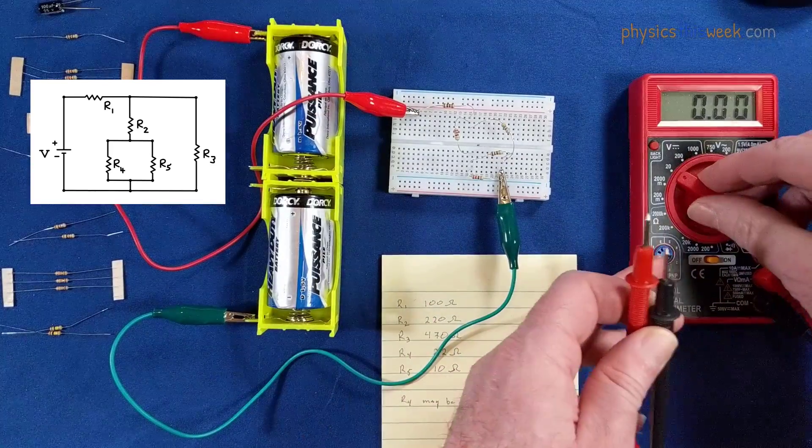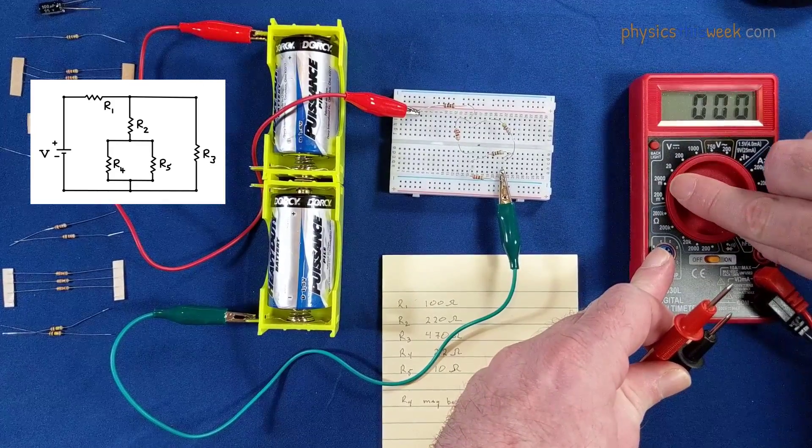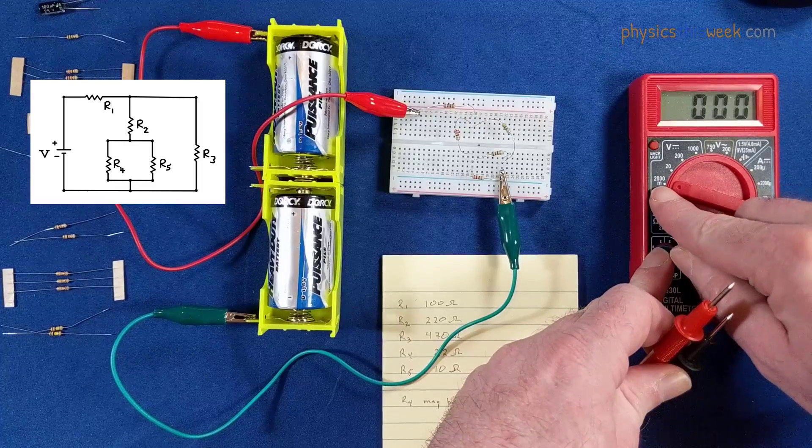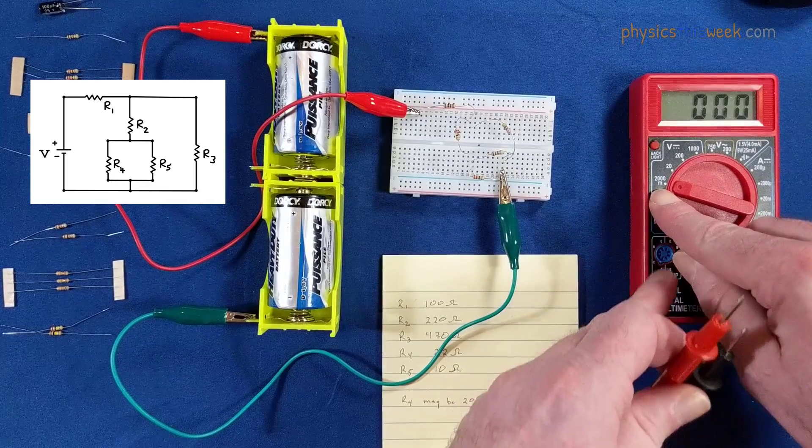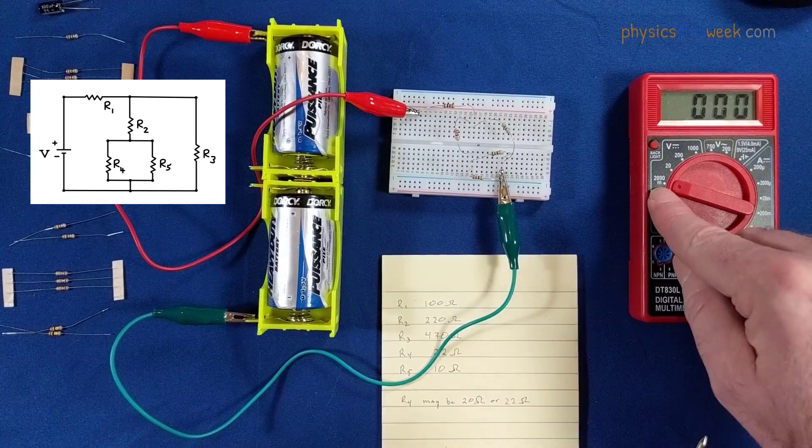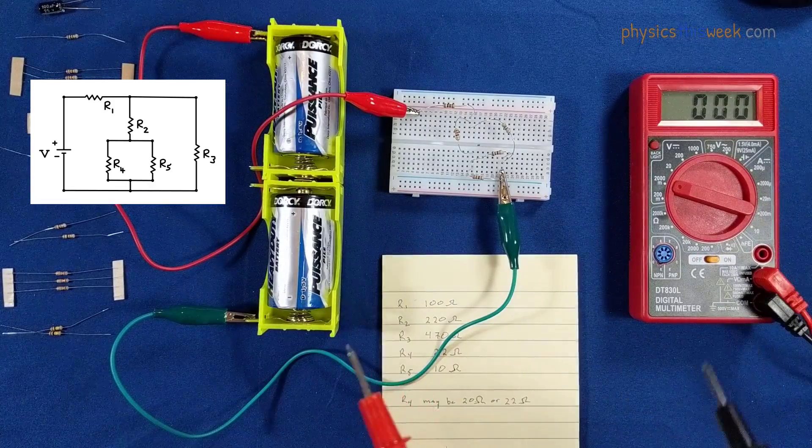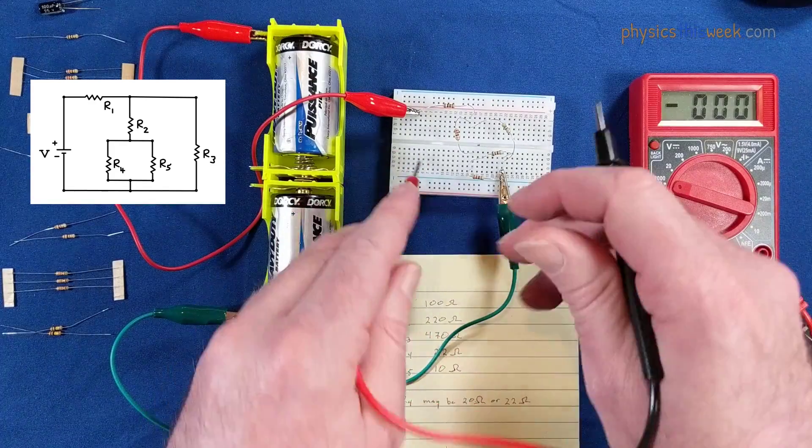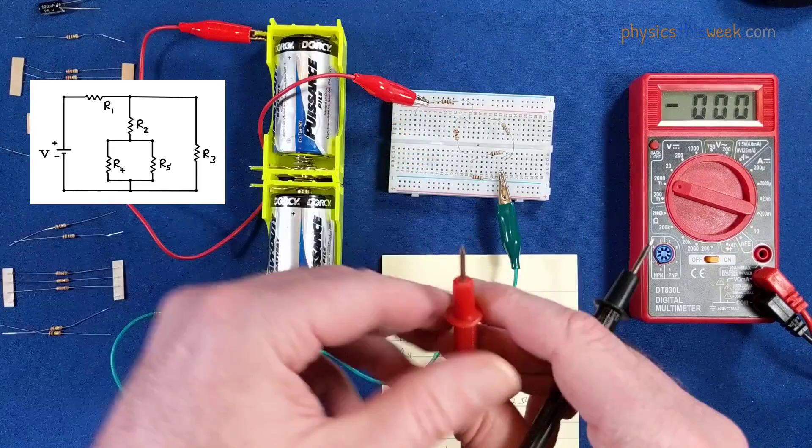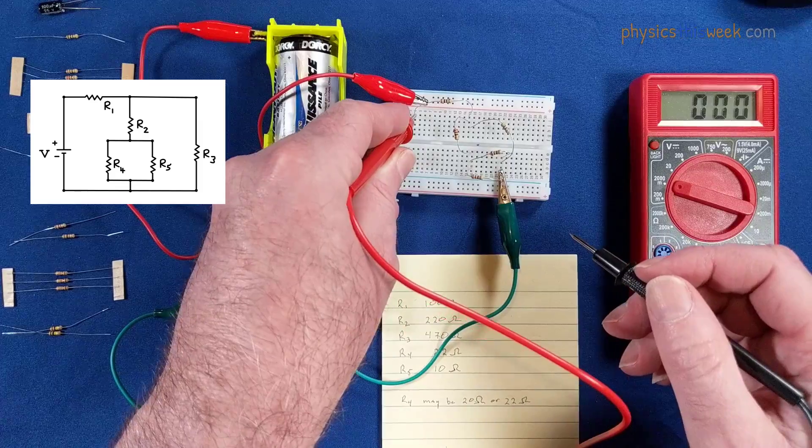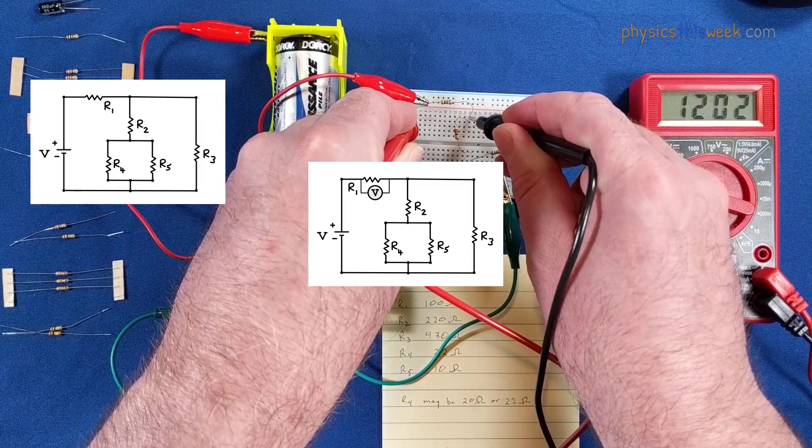I am going to turn the sensitivity up, so I can measure down to 2,000 millivolts which is essentially 2 volts. We will have to do a conversion here because in the data table it asks for it in volts. Now I'm ready to do the measurement. That is resistor one, looks like 1202 millivolts or 1.202 volts.